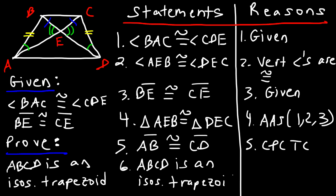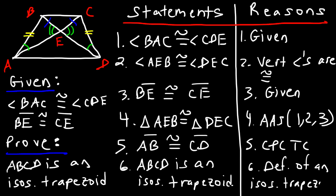The reason for the final statement is the definition of an isosceles trapezoid — if the opposite sides (legs) are congruent, then the quadrilateral is an isosceles trapezoid. That's it for the first example. That's a simple way to prove that a quadrilateral is an isosceles trapezoid.